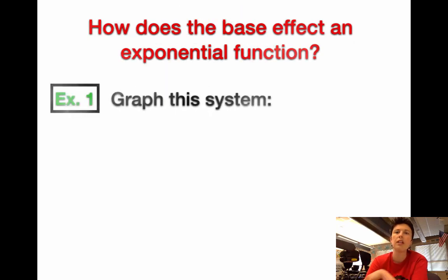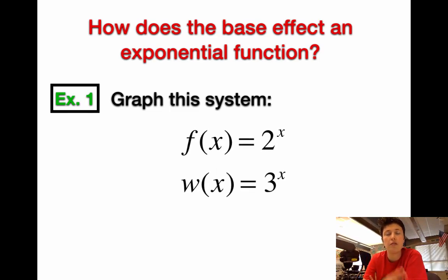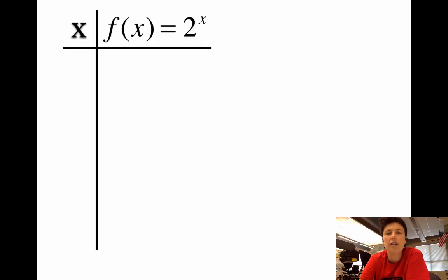So our first example is we're going to graph a system. And we know that a system is when you have two or more functions on a graph. So we're going to graph f of x and w of x. And so here it is. Graph this system. f of x equals 2 to the x power, and w of x equals 3 to the x power. We're going to graph both of those. So to do this, my first thought is, why don't we make some tables and plot some points? So let's start with f of x first. Let's build a table with x and f of x, and it's f of x equals 2 to the x power. And let's put the numbers in there that we typically use. I like to go negative 2 to positive 2 as my starting numbers. So those are my starting numbers.